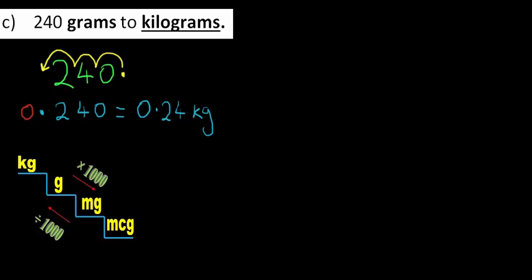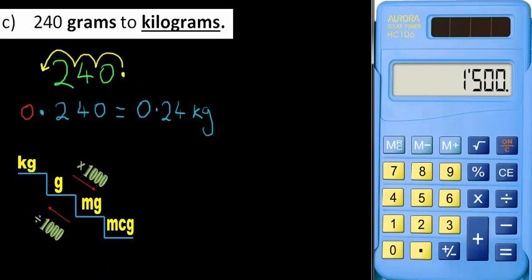Okay check with the calculator, clear the decks. 240 grams to kilograms was going up the stairs so I'm dividing by a thousand, equals 0.24 so we're happy with that.